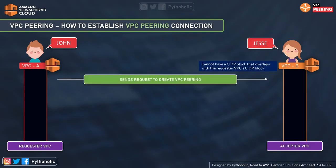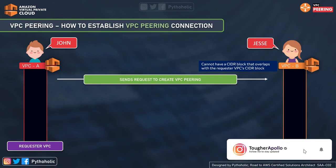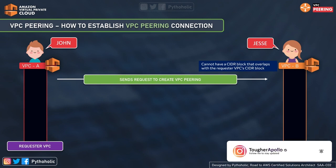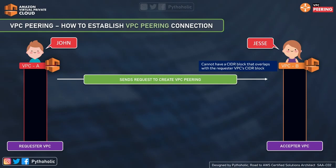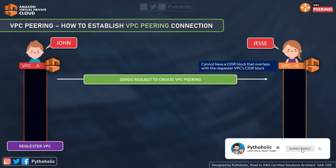John, the owner of the requester VPC, sends a request to Jesse, the owner of the acceptor VPC, to create the peering connection. The acceptor VPC can be in the same account, another AWS account, or owned by someone else entirely. However, you cannot have a CIDR block that overlaps with the requester VPC CIDR block — you cannot have VPC peering connections with overlapping CIDR blocks. This is one of the most important points to remember.